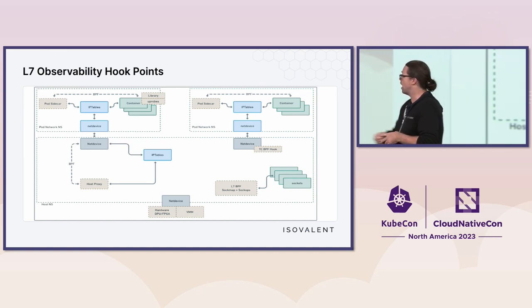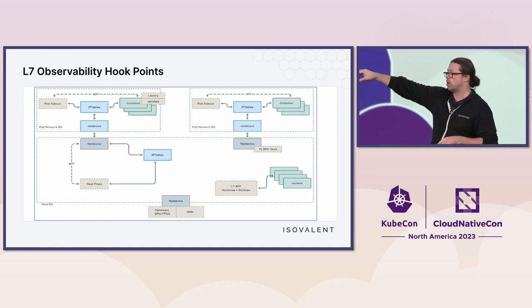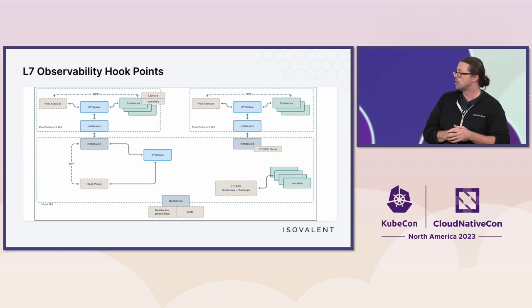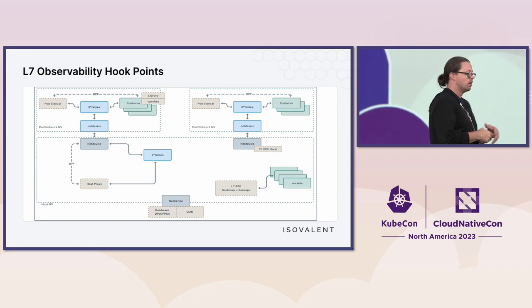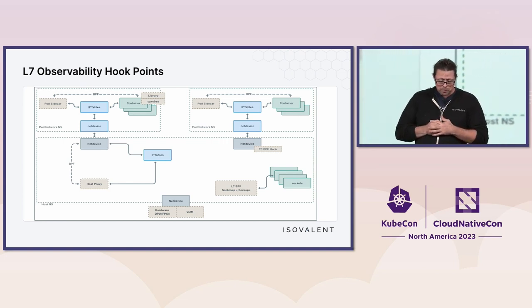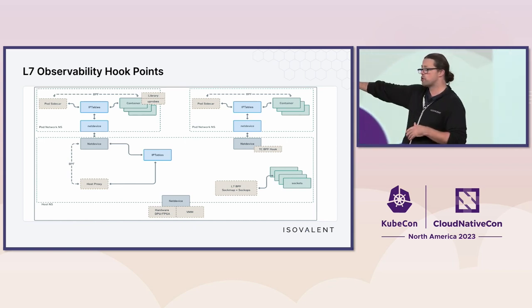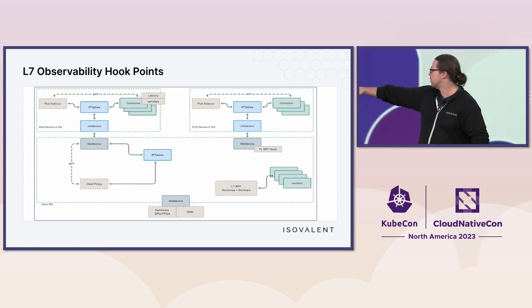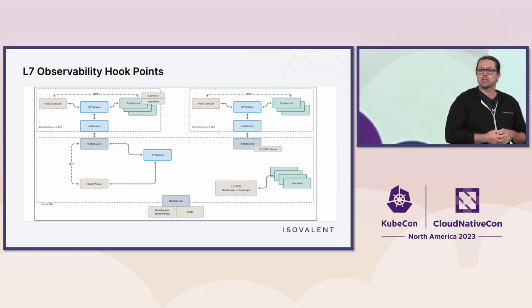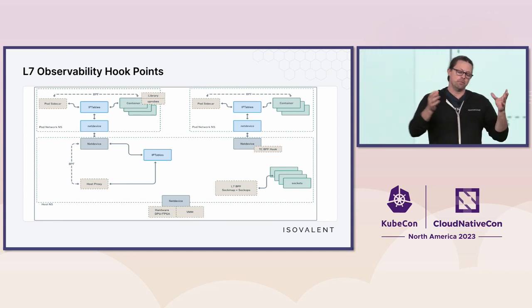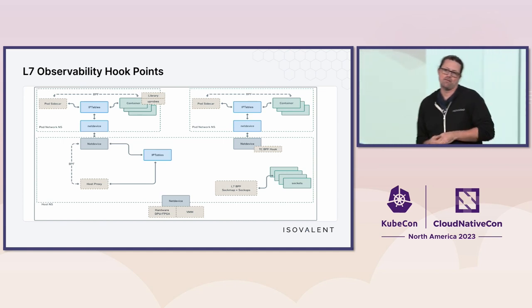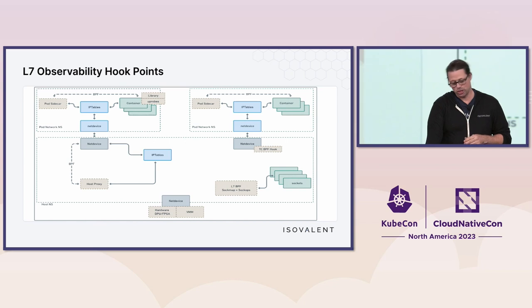Another option that Cilium provides is a host proxy — take that proxy, put it on the host, bring it outside of the pod. When traffic is sent from the pod to the network, you route it through that proxy, either through eBPF or, if you have a more legacy system, through iptables. And if you're inside a virtual machine, there are even hardware hooks — if you're a big cloud provider, you might have a hook on the DPU or FPGA on the network side, where traffic comes out of the system and gets hooked there.